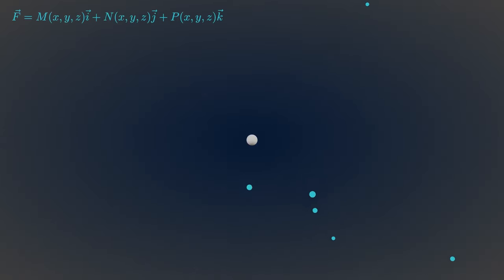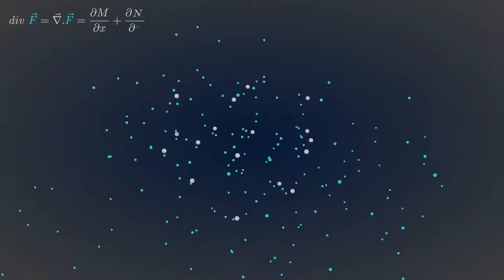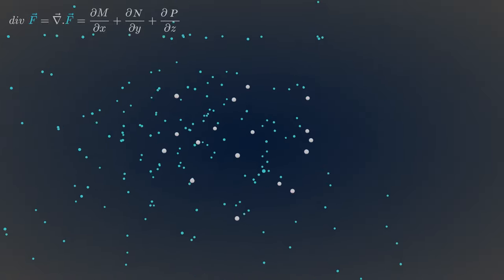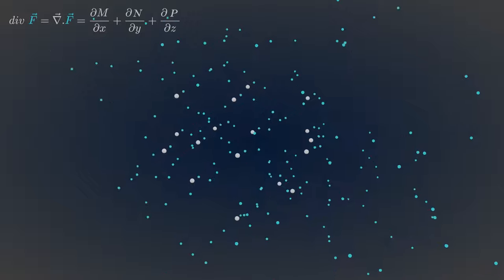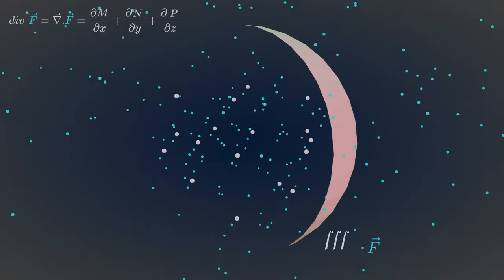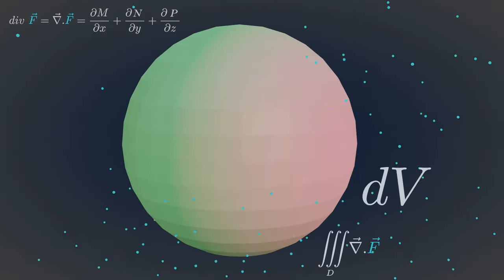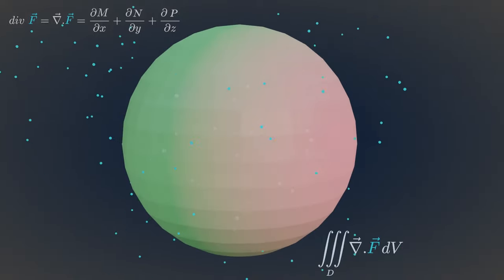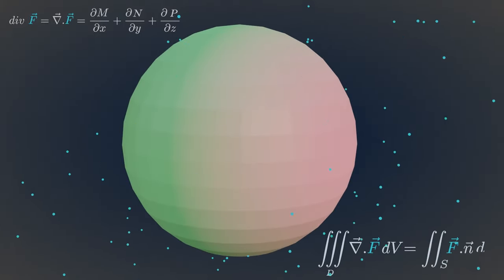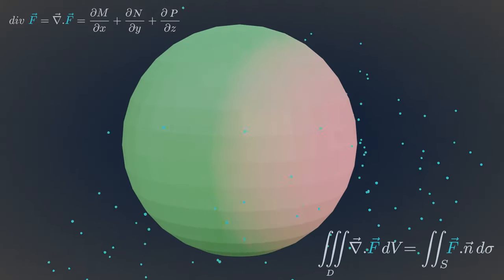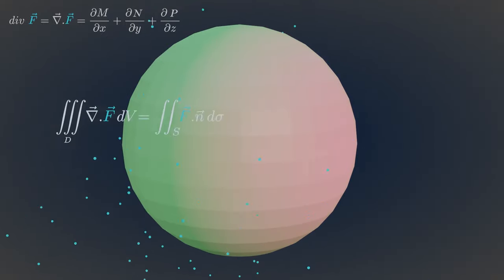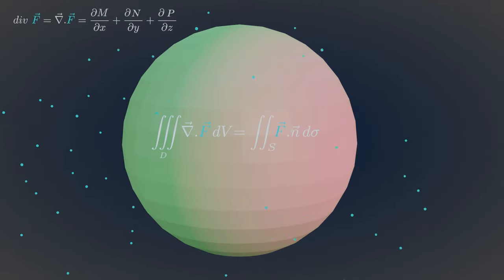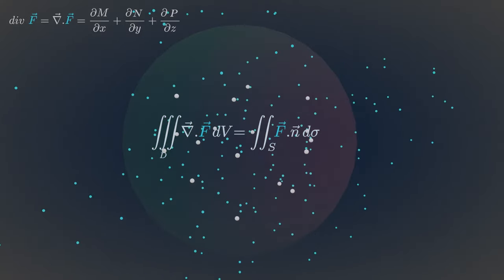Similarly, the divergence of vector fields in three dimensions is written with this formula. Now, if you integrate every divergence inside the domain of a closed 3D surface, then the integration will be equivalent to the flux of the same vector field crossing across this closed surface. Remember, the points of divergence lie in 3D space — that's why we use triple integrals.